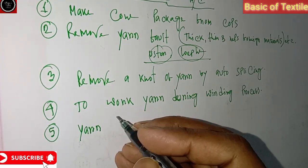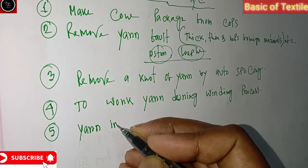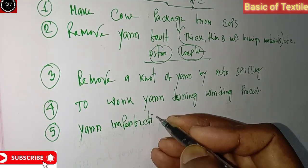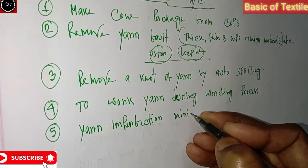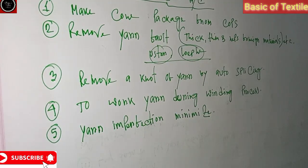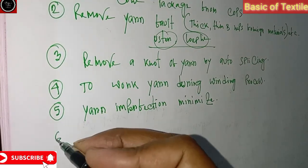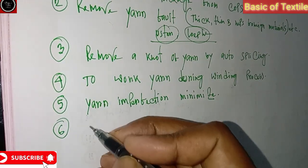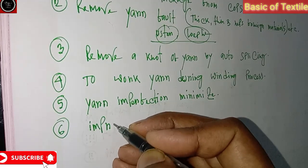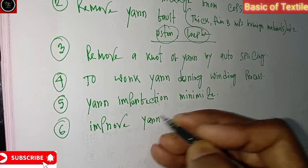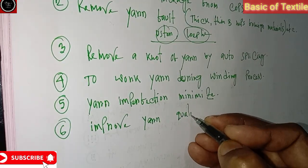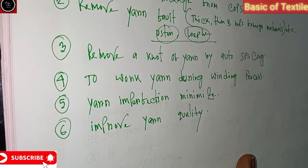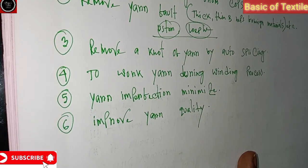Number five: to minimize yarn imperfections. Number six: to improve yarn quality.